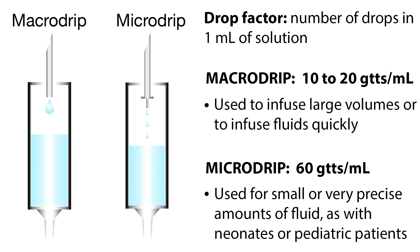Micro drip tubing delivers 60 drops per milliliter, and is used for small or very precise amounts of fluid, as with neonates or pediatric patients.